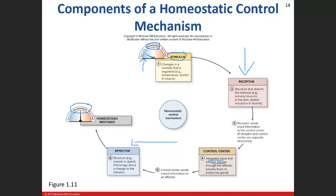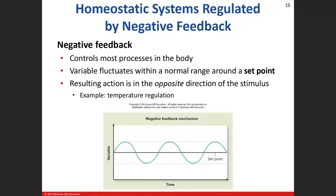It's important that you understand this homeostatic control mechanism — it's going to help explain a lot of the concepts in this class. Trust me. We use two types of loops: a negative feedback loop and a positive feedback loop. This is how we regulate our homeostatic systems. Most of the processes in your body utilize negative feedback.